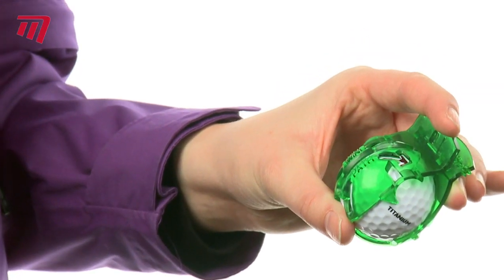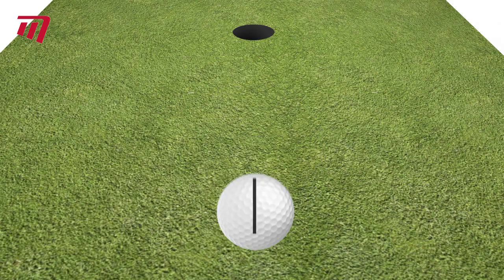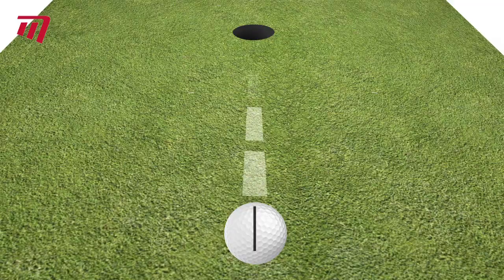The putter squareness line helps you keep the putter face square through impact. And the swing path reminder arrows help promote a proper swing.